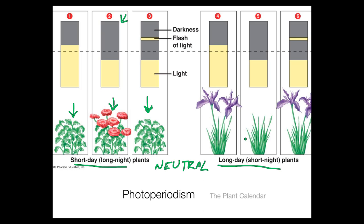In a long-day slash short-night plant, the response is again based on the length of the night. When the night is short, the plant goes ahead and flowers — these would be plants that are probably summer plants. If the night passes that critical length, no flowering occurs. Or if the darkness is interrupted by a flash of light, you will get flowering. This response is controlled by those phytochromes and is a way that plants respond to seasonal changes. It's called photoperiodism.